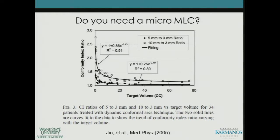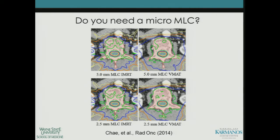On your platform, do you need a micro-MLC? Shown here is a conformity index ratio for 5mm to 3mm leaf width and 10mm to 3mm leaf width. There are diminishing returns as you get to larger and larger targets. For a 1cc target volume, going from a 5mm to 3mm MLC leaf width might realize on the order of 30% improvement in conformity index, but at 25cc you're looking at less than 5% difference between 5mm and 3mm. Another paper comparing 5mm MLC versus 2.5mm MLC for IMRT and VMAT showed relatively minimal differences between these two MLC sizes for typical spine sites.